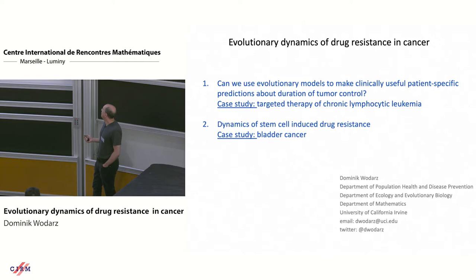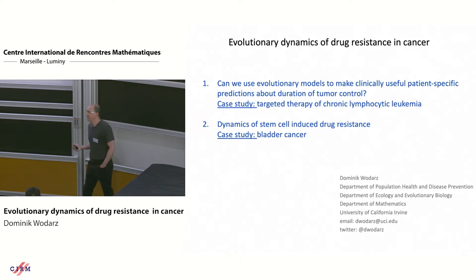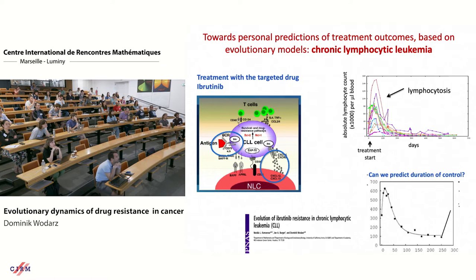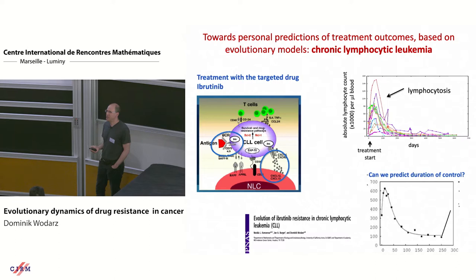The second part of the talk will cover a different type of drug resistance: stem cell-based drug resistance. Stem cells are naturally resistant to killing by drugs such as chemotherapy, and I want to explore that and the evolution of that in the context of bladder cancer. So we'll start with leukemia - chronic lymphocytic leukemia - the most common leukemia in the Western world, where treatment has made significant advances over the last year.